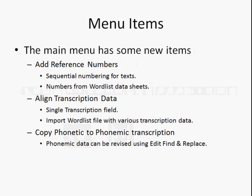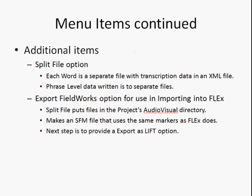New menu items in the test version include a way to add reference numbers — either sequential numbers for use in a text, or numbers from a word list if you import the word list with numbers and gloss. There's also a new feature for aligning transcription data, and the new feature allows importing a word list with various transcriptions that can be applied to the waveform. There's also a new function of copying phonetic transcription to phonemic, and a split file option where each word can be put into a separate file with its own XML data, plus phrase level data that can now be written out.